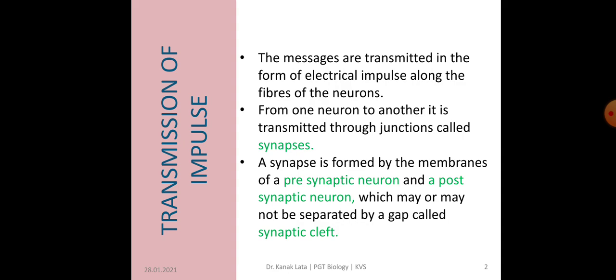In a synapse, the transmitting cell is called presynaptic cell and receiving cell is called postsynaptic neuron. Presynaptic neuron and postsynaptic neuron may or may not be separated by a gap called synaptic cleft.